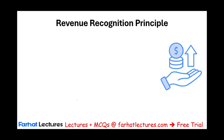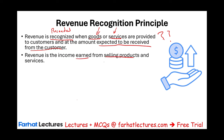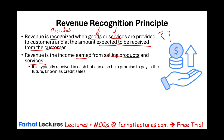I cannot emphasize this enough. Revenue is recognized — and when we say recognized, it means the same thing as recorded. Revenue is recognized when goods or services are provided to a customer, and at the amount expected to be received from that customer. This means you can record your revenue when you provide the goods and services, and you would record it at the amount you expect to receive. Revenue is the income earned from selling products or services. It is typically received in cash, but it can also be a promise to pay in the future, known as credit sales.